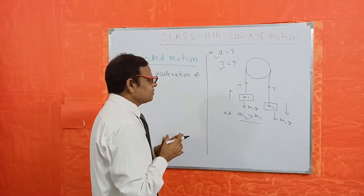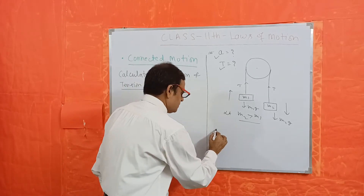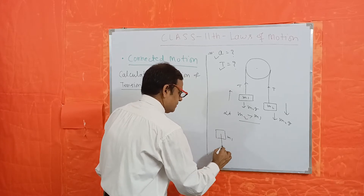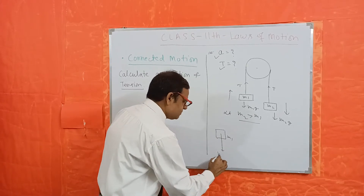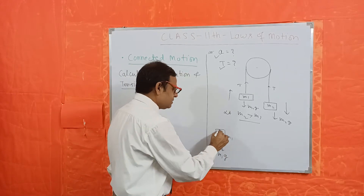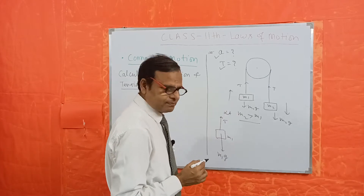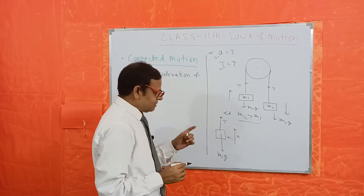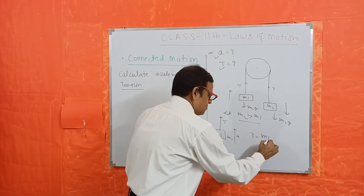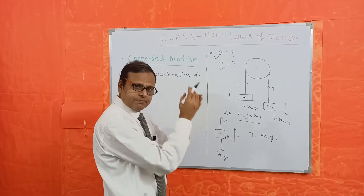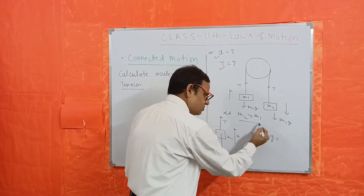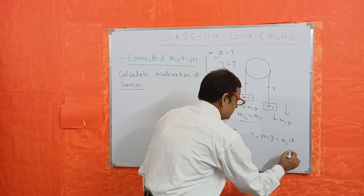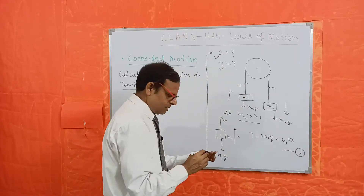Equation of motion for M1: the free body diagram of M1 shows M1g acting downward and tension T acting upward. The overall motion is upward with acceleration A. That means T minus M1g is the net force pulling M1 up, so T minus M1g equals M1 times A. This is equation number 1.